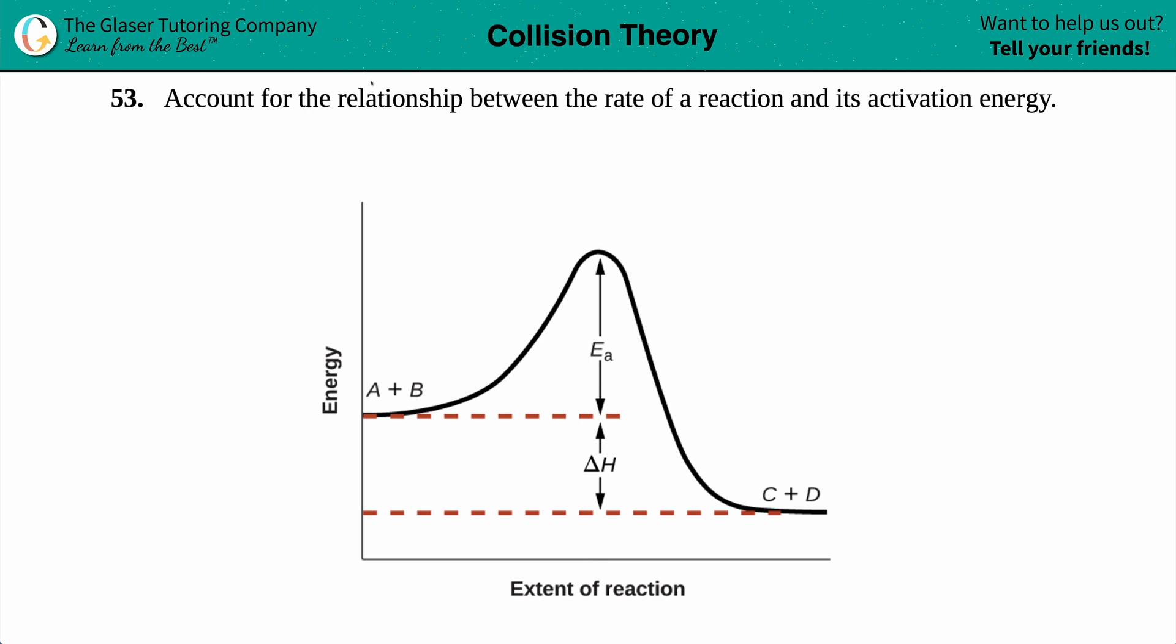Number 53, account for the relationship between the rate of a reaction and its activation energy. Okay, so we have to basically talk about some type of relationship. Generally, if they're asking for a relationship, it's either going to be a direct relationship or an indirect relationship, whether both of these will be increasing or one's increasing and one's decreasing.